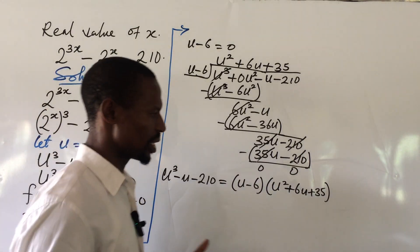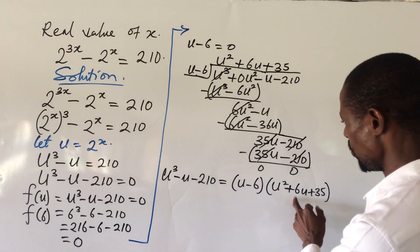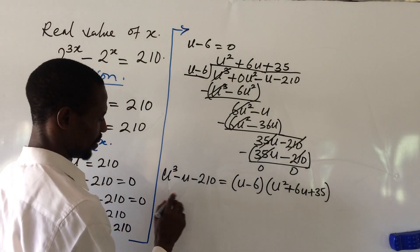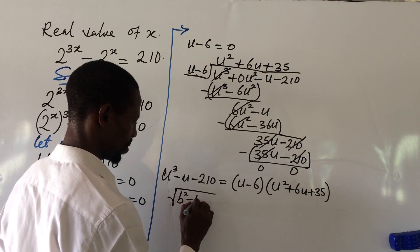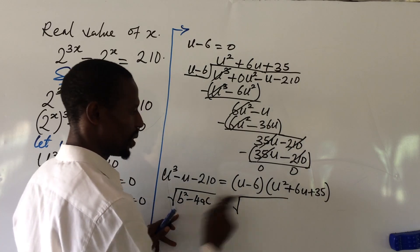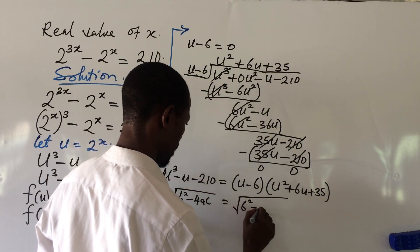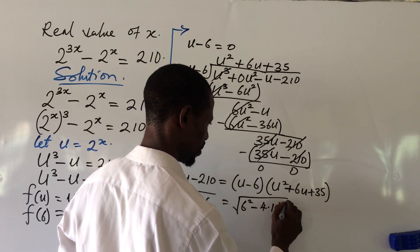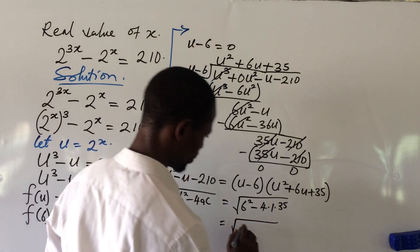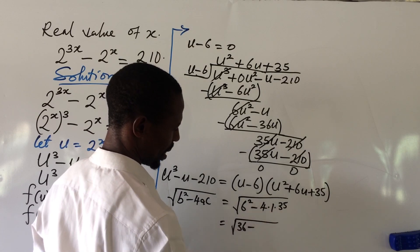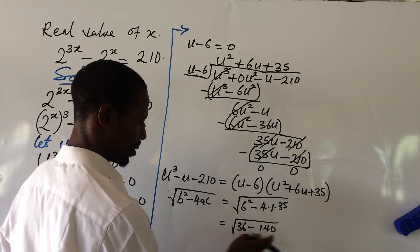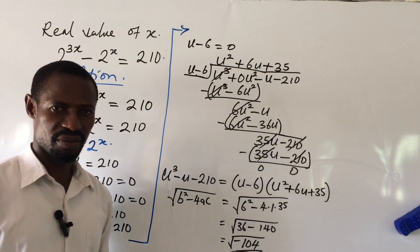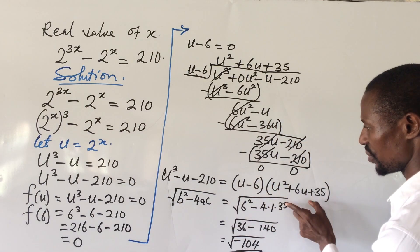Before solving the quadratic, let's check whether u squared plus 6u plus 35 gives a real root, since we need the real value of x. Using the discriminant: square root of b squared minus 4ac equals square root of 6 squared minus 4 times 1 times 35, which equals square root of 36 minus 140, equals square root of negative 104. This is an imaginary number, so the quadratic does not give a real root. We use only the first factor.